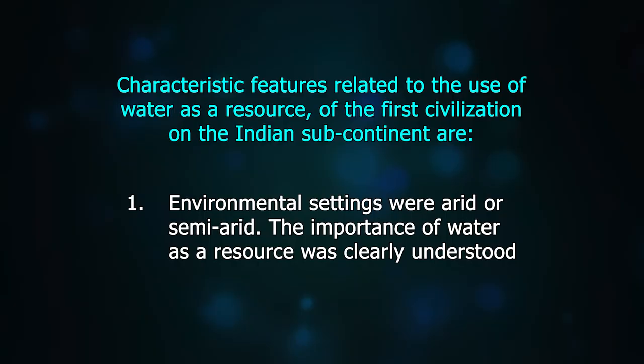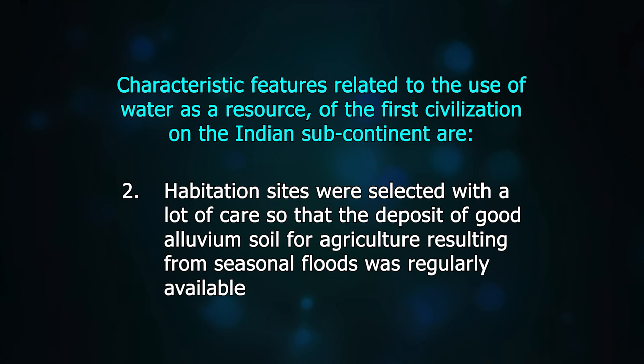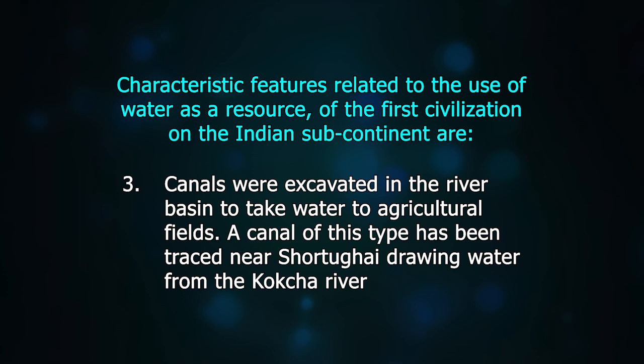Some characteristic features related to the use of water as a resource of the first civilization on the Indian subcontinent: the environmental settings were arid or semi-arid, and the importance of water as a resource was clearly understood. Habitation sites were selected carefully so that deposits of good alluvial soil for agriculture resulting from seasonal floods were regularly available. Canals were excavated in river basins to take water to agricultural fields — a canal of this type has been traced near Shortugai, drawing water from the Kokcha River.